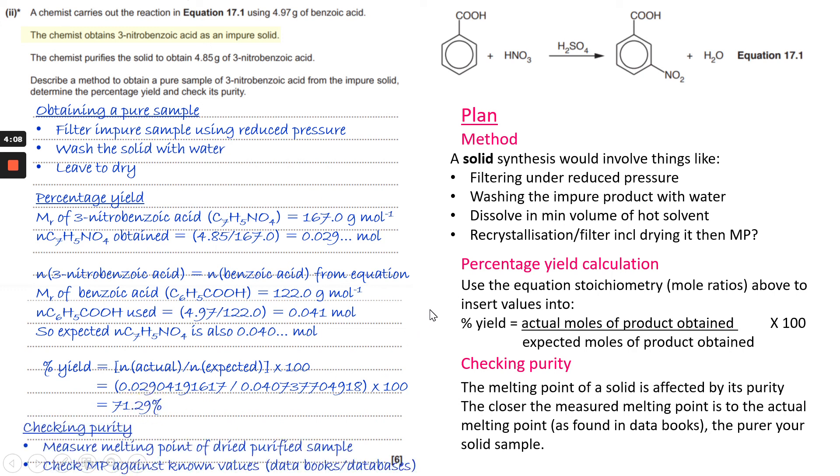The final part is to have a look at the checking purity. So you measure the melting point of the dried purified sample and check it against known values from either data books or databases. You could also use spectroscopy instead if you wanted to; the mark scheme allows for that.